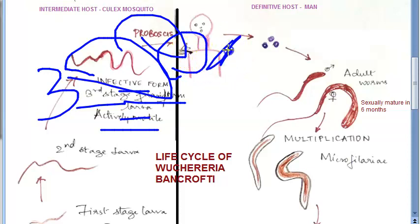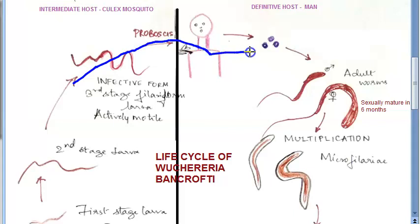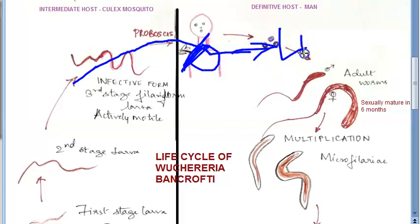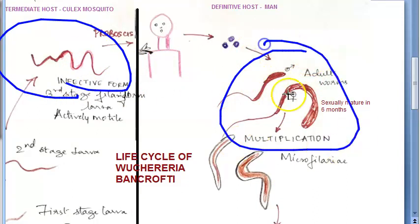Our immune system will destroy some of the larva, but some do make it to the lymph nodes. The third stage infective filariform larva, which is actively motile, passes from the proboscis of the Culex mosquito through the skin. Whatever our immune system destroys gets destroyed, but the remaining larvae enter and attack the lymph nodes.